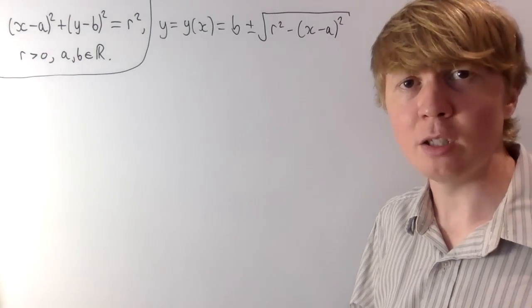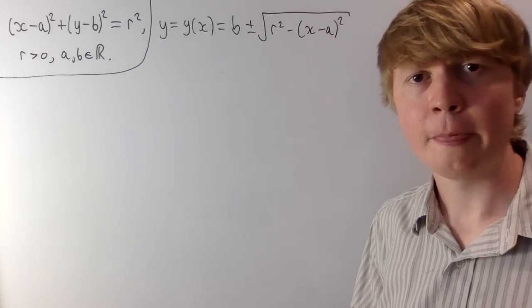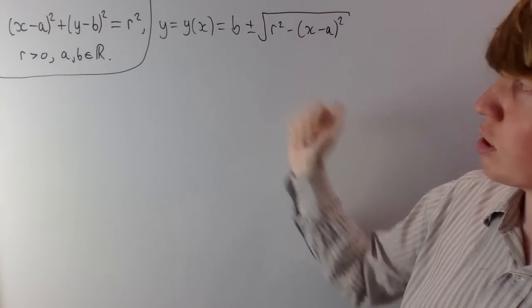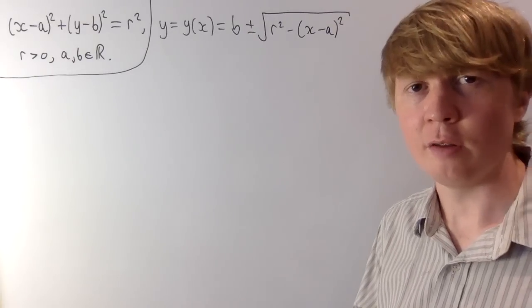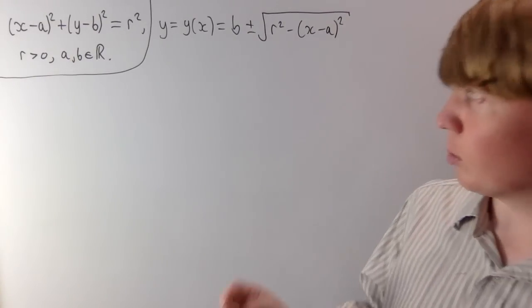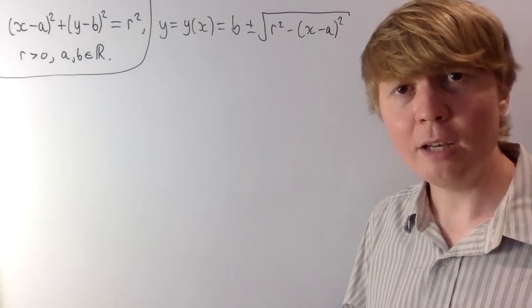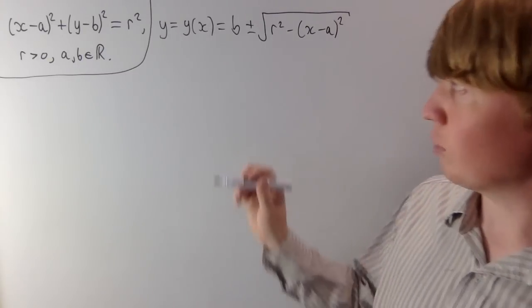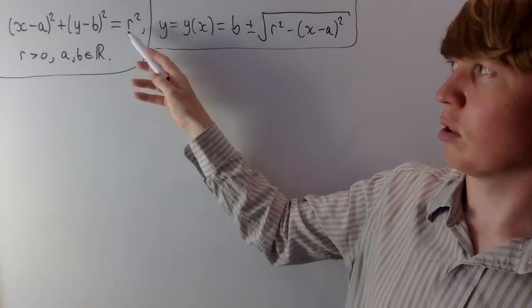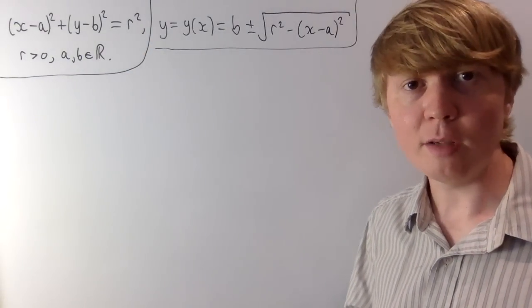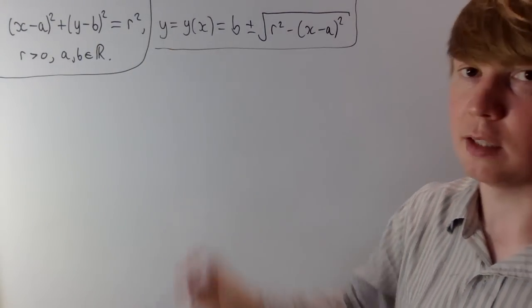What we're really going to end up with is a load of semicircles rather than circles as our solutions. In general, we could use a result called the implicit function theorem to show that y is a differentiable function of x in certain neighbourhoods, but for this problem we can just take for granted that y is going to be a nice differentiable function of x.